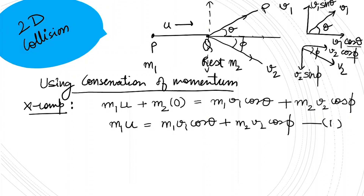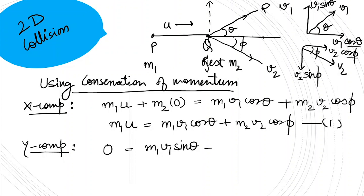For the y-component of momentum: before collision the y-component is zero for both particles. After collision, since the vertical components are in opposite directions: m1*v1*sin(theta) = m2*v2*sin(phi). This is equation number 2.